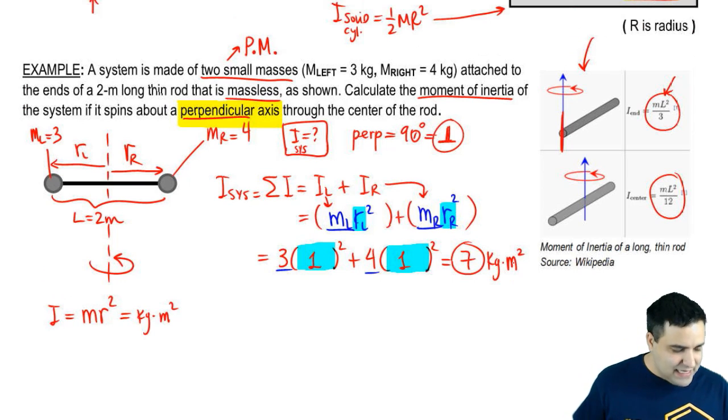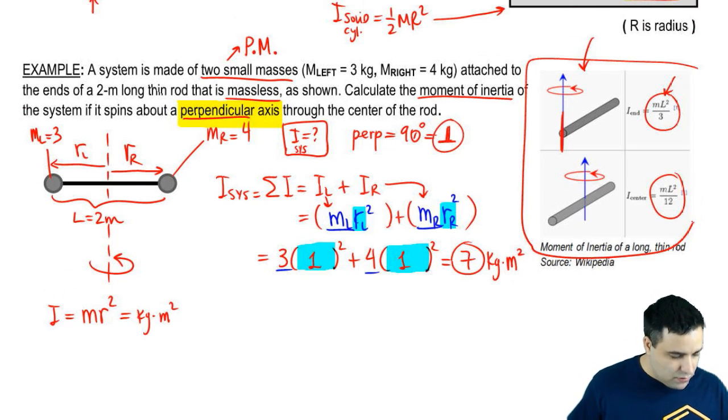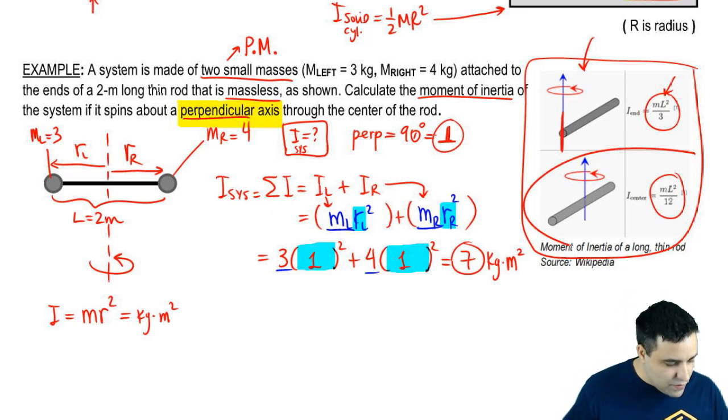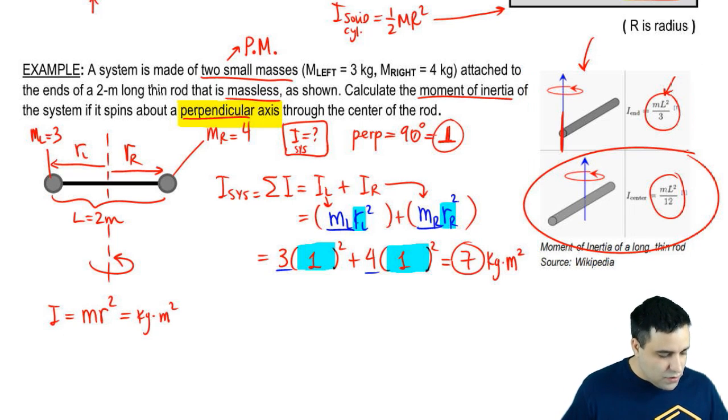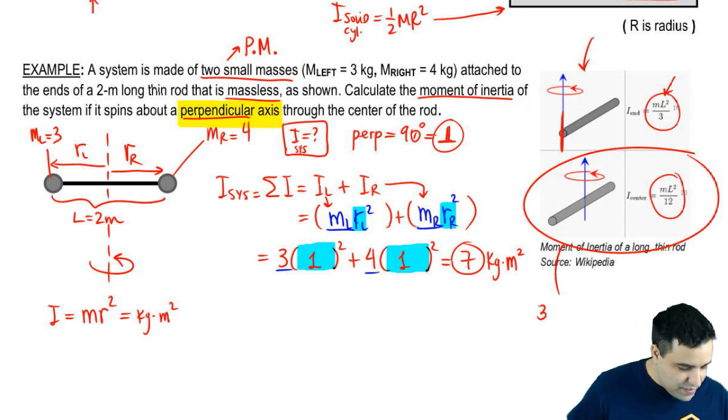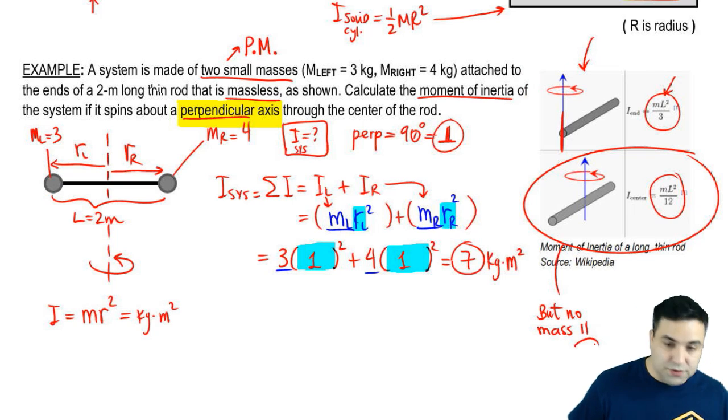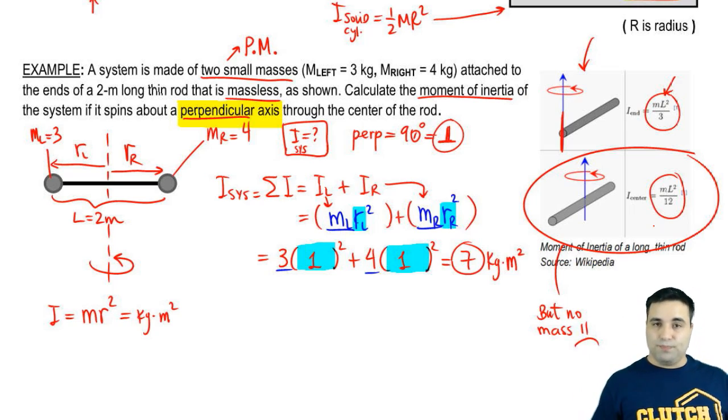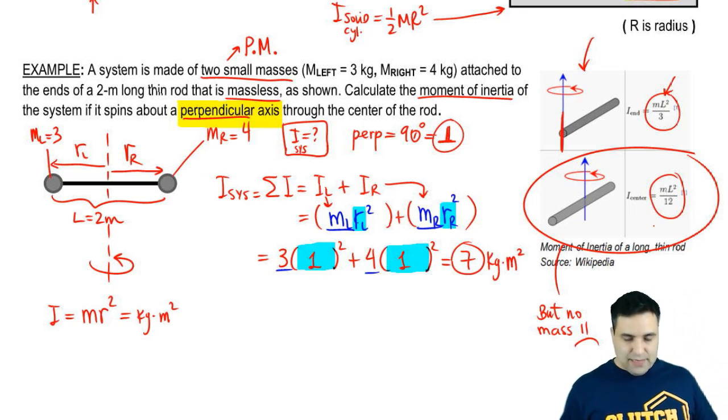That's it for this one. I want to point out that we actually didn't use this table, right? We had a rod here. We didn't use this table because this rod didn't have a mass. If it had a mass, you would have used this equation right here. You would have used this equation here. But no mass, sad face, so we didn't get to use it. But you would have used this one because it's spinning around its middle point. That's it for this one. Let's keep going.